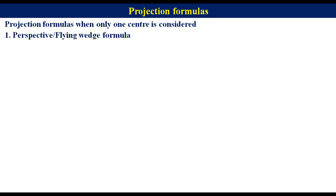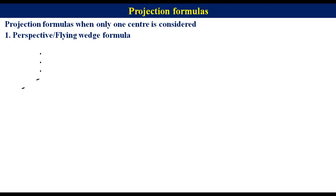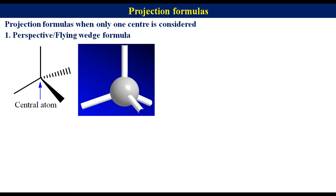The first is the Perspective or Flying Wedge formula, and the second is the Fischer projection formula. In a perspective formula, two bonds are drawn on the plane of the paper. A solid wedge is used to represent a bond that projects out of the plane of the paper towards the viewer, and a hatched wedge represents a bond projecting back away from the viewer. The point of attachment of the four bonds represents the central atom. Bond A and B are shown by solid line, Bond C by solid wedge, and Bond D by hatched wedge.